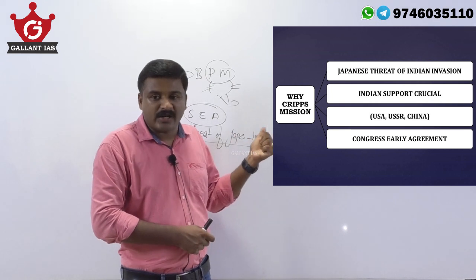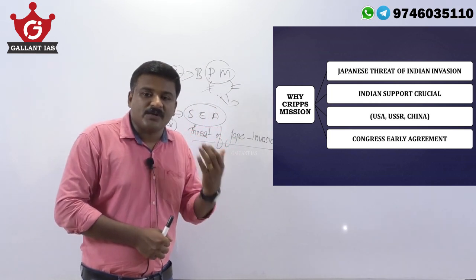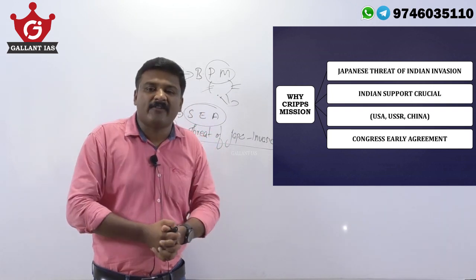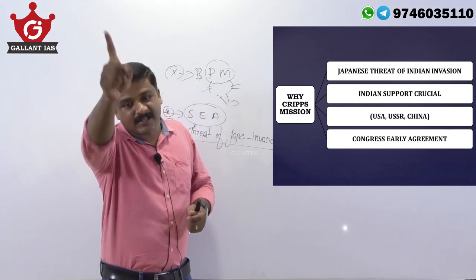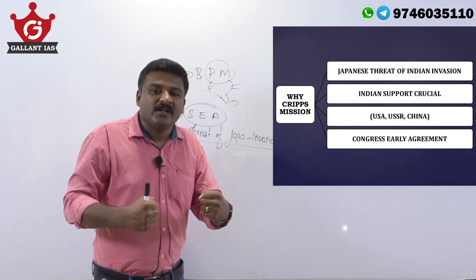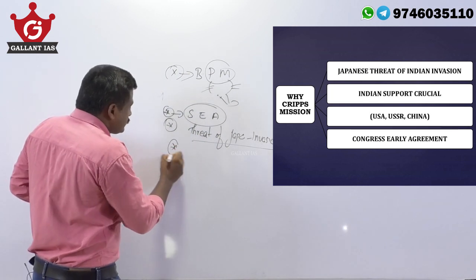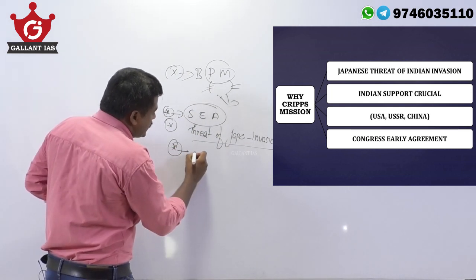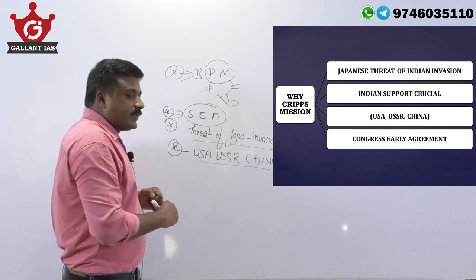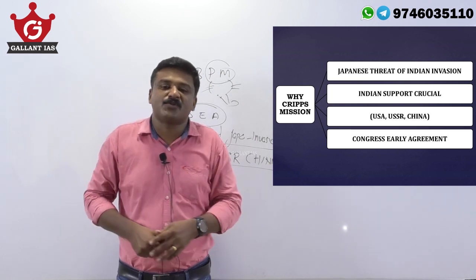Another cause was pressure from the Allies — USA, USSR, and China — all putting pressure upon Winston Churchill to seek the support of Indians, as Indian support was very much required to defeat the Axis powers.